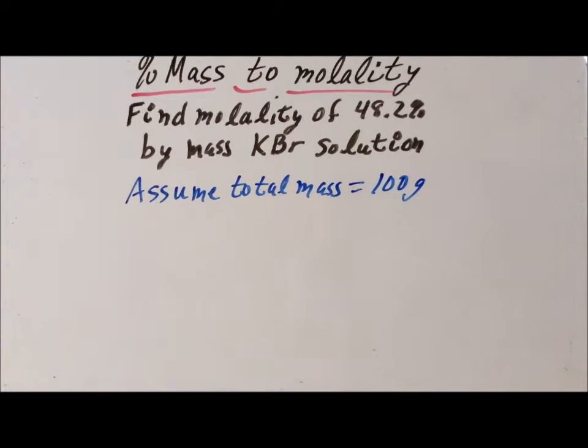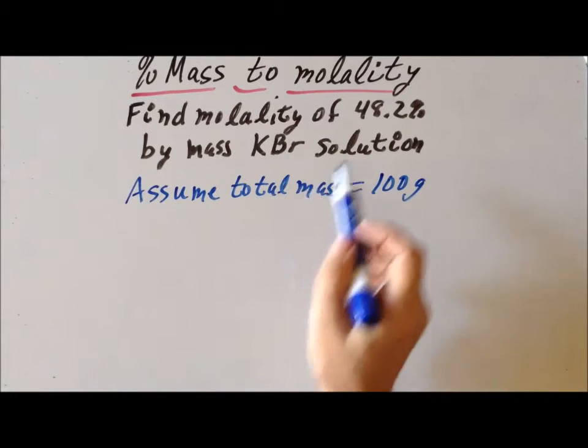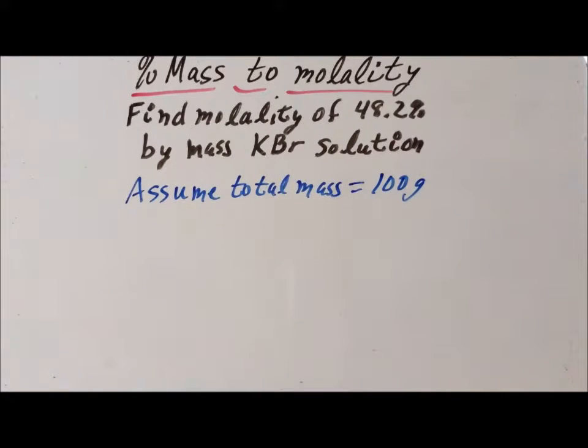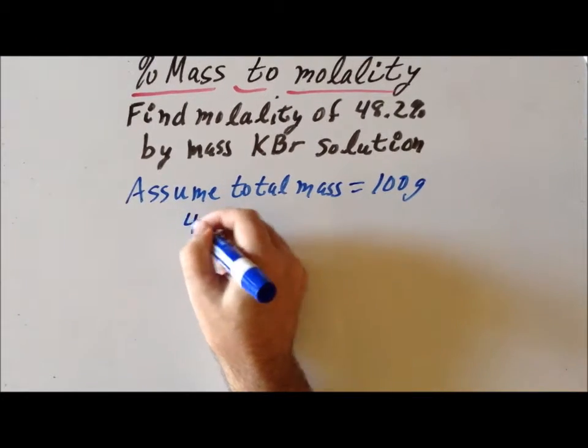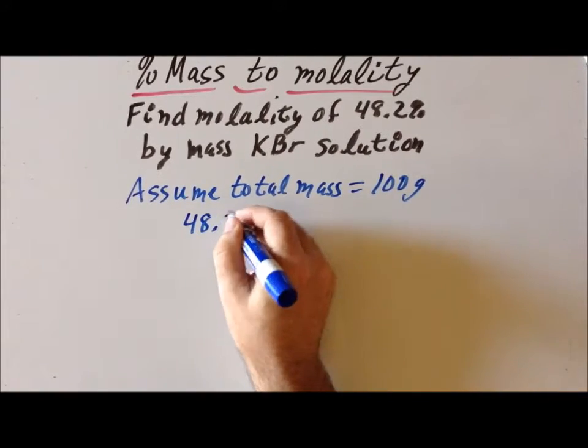The reason why we do this is it makes it easy to instantly convert from percentages to masses. Since the solution is 48.2% by mass KBR and the mass is total 100 grams, that tells us that the mass of KBR is 48.2 grams.